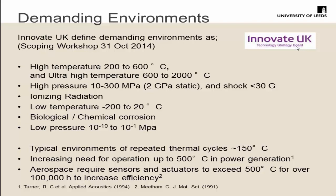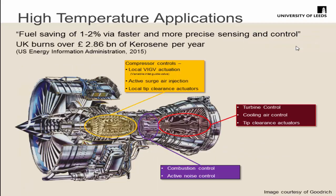Typical environments require repeated thermal cycles of 150 degrees, but now we're moving to where there's increasing need for 500 degrees, and in aerospace it's even more extreme — up to 1,000 degrees centigrade in some parts, needing 100,000 hours of usage. Airbus claims that fuel saving of one to two percent through more precise control and sensing can be achieved. Considering the UK alone burns nearly three billion pounds of kerosene a year, that represents considerable millions of pounds worth of saving.